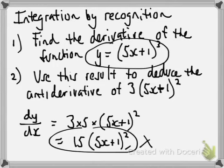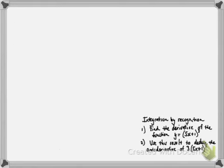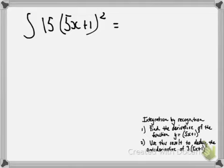That being that, sorry. The original. OK. If that, the derivative of that is that, then the integral of that goes back to there. So, we can say that the integral of 15 outside of 5x plus 1 squared equals the guy that we started with, which was 5x plus 1 cubed. Plus, of course, there would be a c there as well.